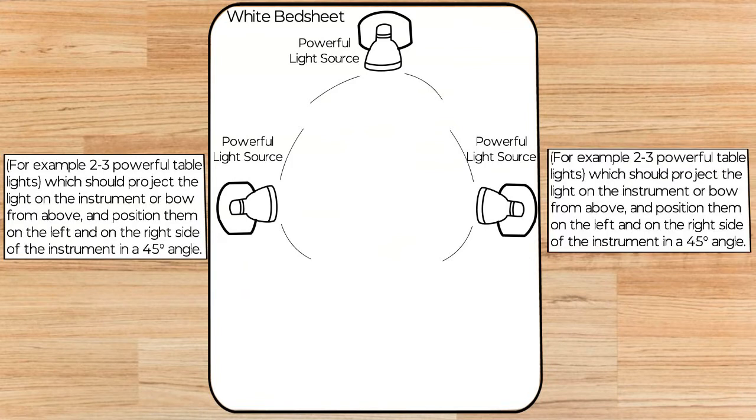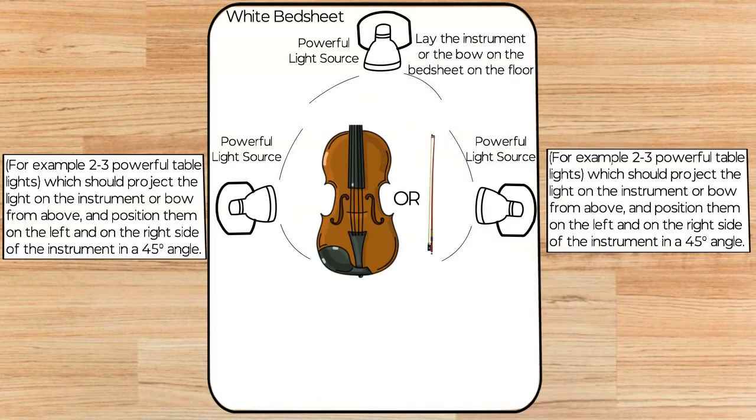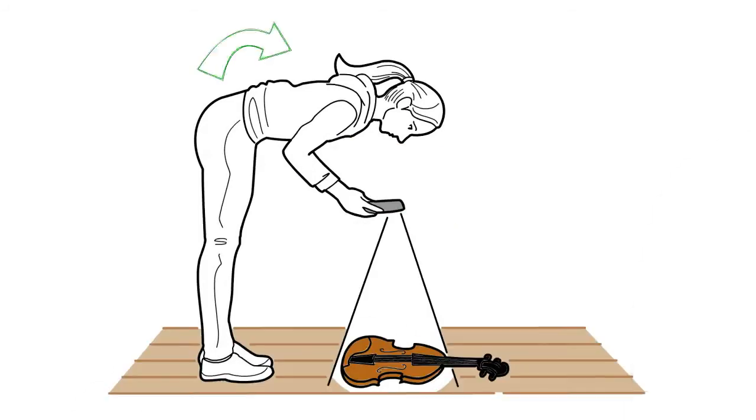Place the instrument or the bow on the bedsheet on the floor. Place yourself above the instrument and find the right height to have the whole instrument on your control screen.